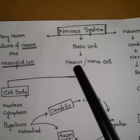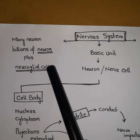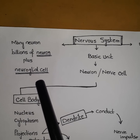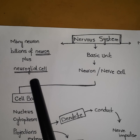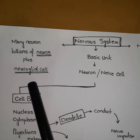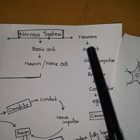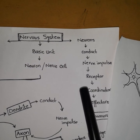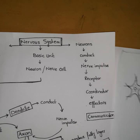The nervous system consists of billions of neurons or nerve cells, and also the neuroglial cells present in our nervous system. The neuroglial cells are supporting cells that are present along with the neuron and help them to perform their function. The word 'glial' is from the Greek. The pathway through which the neuron performs its function is that the neuron conducts the nerve impulse toward the receptor, and the receptor then moves the impulse toward the coordinator and then the effectors.